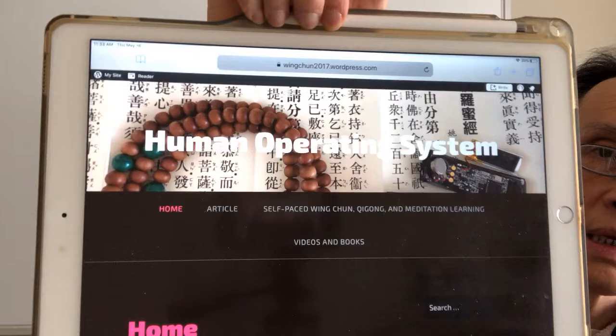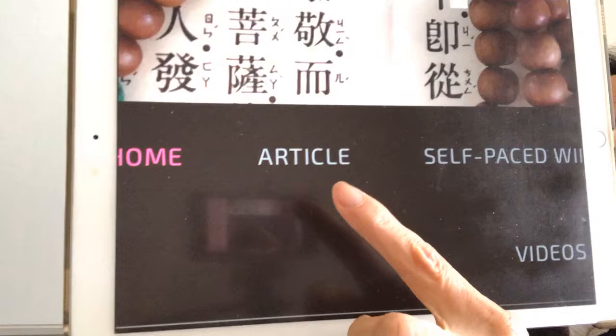So it's very simple now. You can either go into the YouTube or go to the Wing Chun 2017 WordPress.com. Which is this website. And then you just go into the article, under the article, you can find all my videos, the YouTube videos there, and then the document comes with the videos.